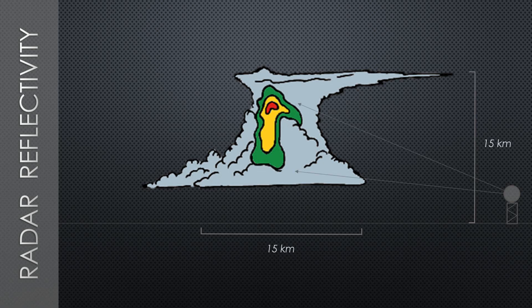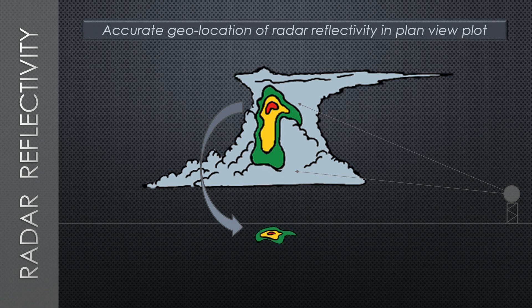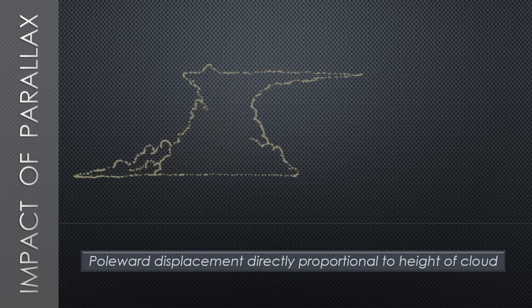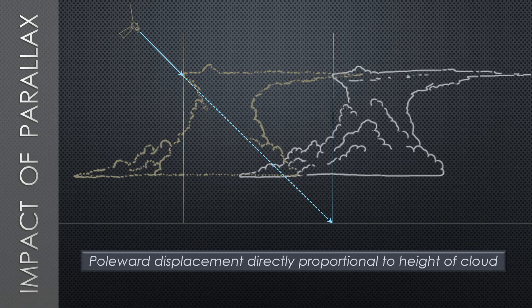When depicted on a plan-view map, the reflectivity core will be located accurately, directly beneath the position where the radar beam intercepts it. However, the corresponding satellite image will be displaced poleward. The distance of that displacement is a function of its height. While GOES-16 detects the reflectance or brightness temperature of the thunderstorm top, it assumes that feature is at the Earth's surface. Therefore, rather than placing it below the back edge of a 50,000-foot structure, the satellite geolocates the feature as though it were positioned at the point where the beam intercepts the ground. That pixel will then be placed at this perceived position, several kilometers north of its true location.